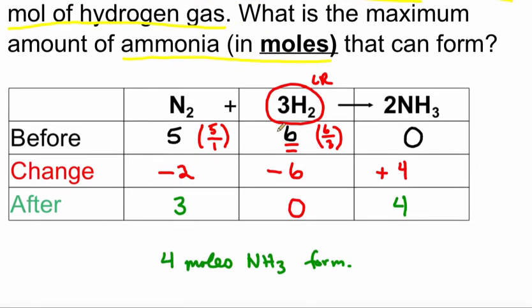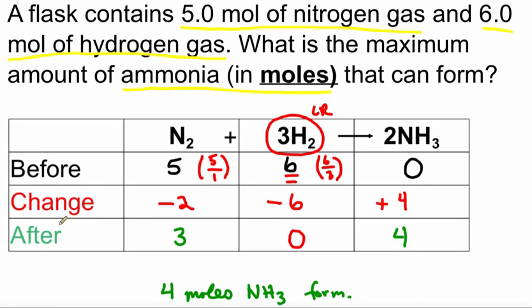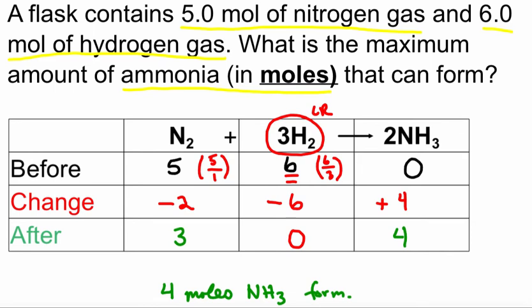Now there are harder versions of problems that require the same type of analysis. So let's look at one that's a little bit more difficult. Here, again, we're going to use the same equation just for familiarity. We're taking nitrogen and hydrogen and reacting to make ammonia. But this time we're given amounts not in moles, but in grams. So we have five grams of nitrogen gas and six grams of hydrogen gas. Now the fundamental question is still the same. What's the maximum amount of ammonia in grams that can form?